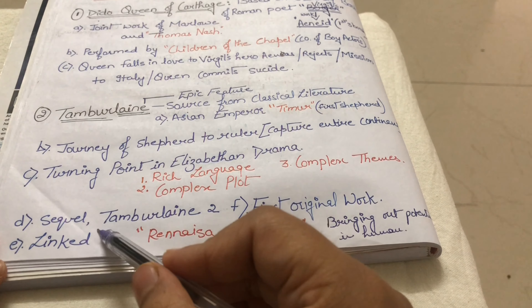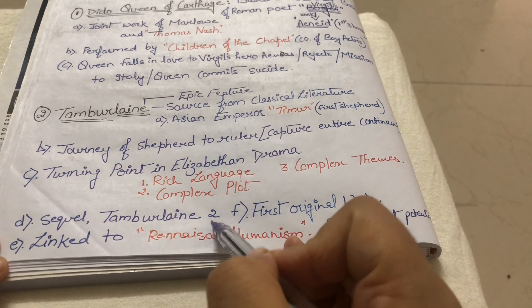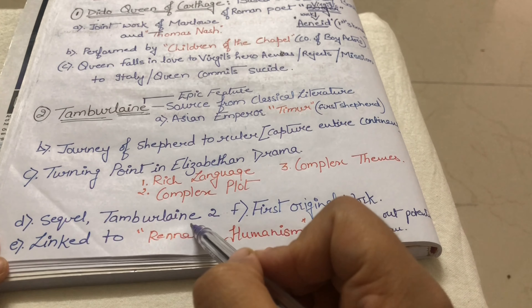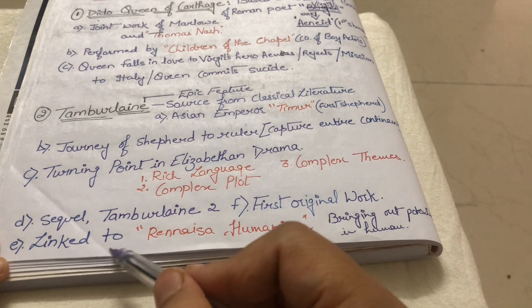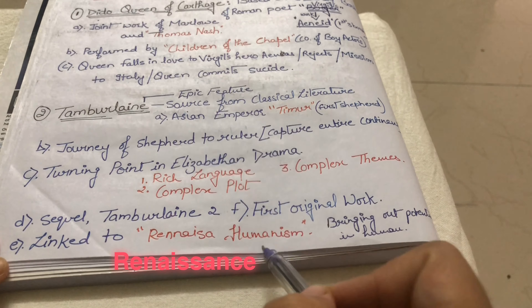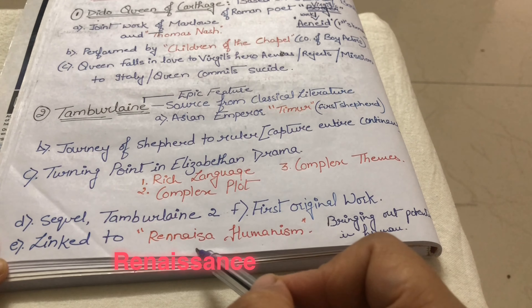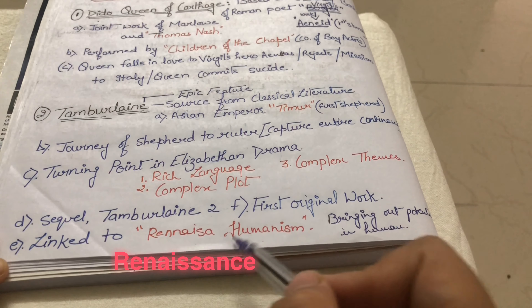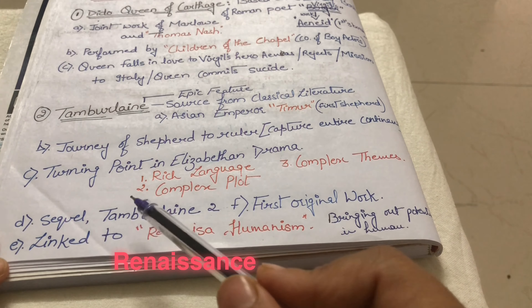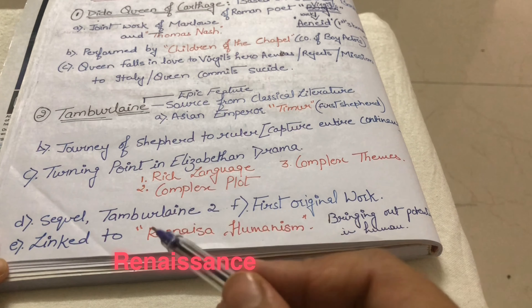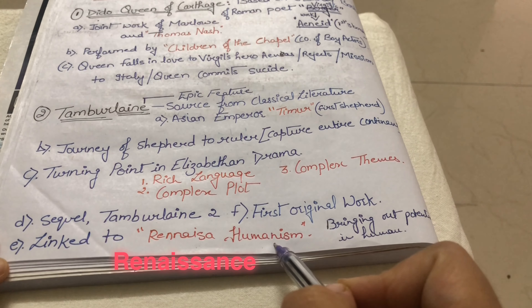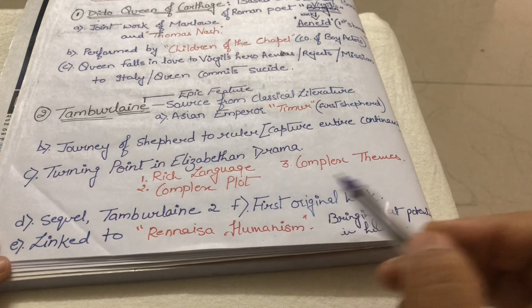Tamburlaine also has a sequel. It is linked to Renaissance humanism. Renaissance humanism showed the first original work demonstrating the potential of humans — I will explain this further in a video on the Elizabethan age.